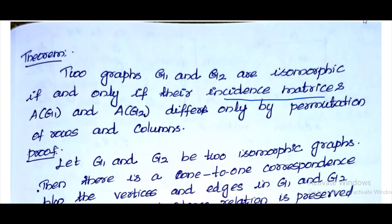Permutations of rows and columns means we simply relabel the vertices or edges in the incidence matrix.